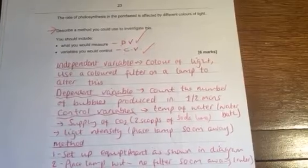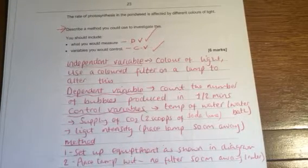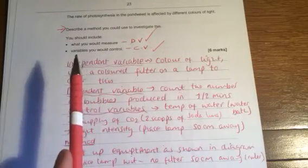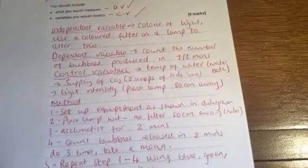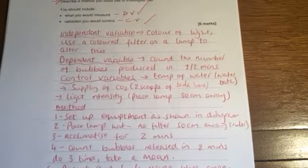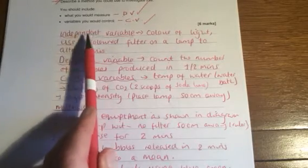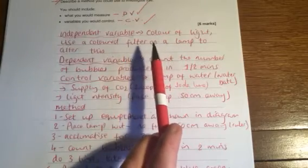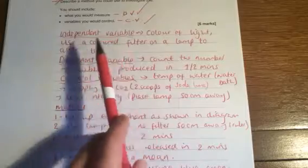Now the rate of photosynthesis in the pondweed is affected by different colours of light. Describe a method you should use to investigate this. You should include what you should measure, that's your dependent variable, and also the variables that you'd like to control. Now there are certain ways that we set out method answers. I'll make it really easy for you. For a six mark question you don't actually have to write that much if you look at my mark answer. So I've got a section that says what my independent variable is. It doesn't directly ask you for that, but you've got to show them how you're changing what you're changing. Now in this case we're changing the colour of light and all you have to do is use a coloured filter on the front of a lamp. Now a coloured filter is just a clear transparency or a coloured transparency that will let certain colours of light through. That's you've told them exactly how you're going to do that.